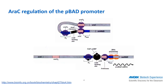In the presence of arabinose, the sugar binds to the ARIS-C protein, releasing it from binding upstream of the promoter, releasing the DNA loop formation, and allowing RNA polymerase to bind and transcribe the downstream gene, which, in our case, is RFP.